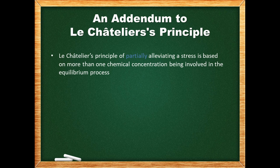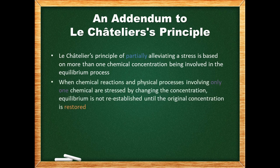At this point, we need to make a small addition to Le Chatelier's principle. Le Chatelier's principle of partially alleviating the stress is based on more than one chemical concentration being involved in the equilibrium process. When an equilibrium removes some of an added chemical, other chemical concentrations also change, which prevents the stressed chemical from reaching its original equilibrium concentration. However, if the equilibrium only involves one chemical concentration, then equilibrium is not re-established until the original concentration is restored — in other words, the stress will be completely alleviated.